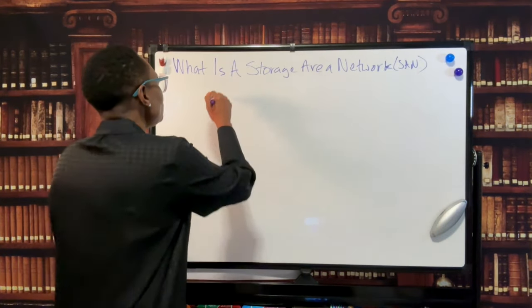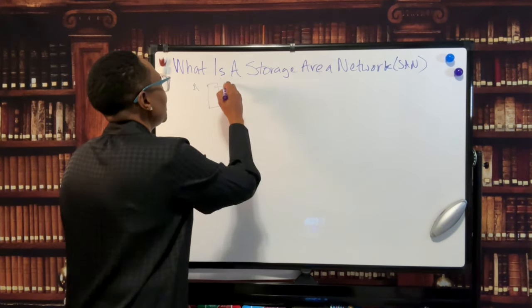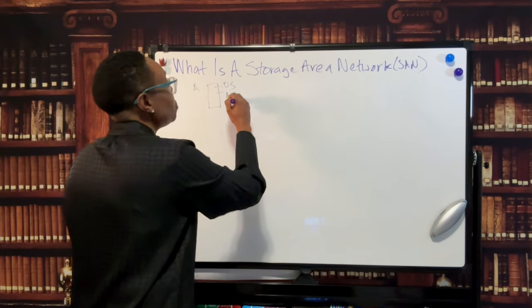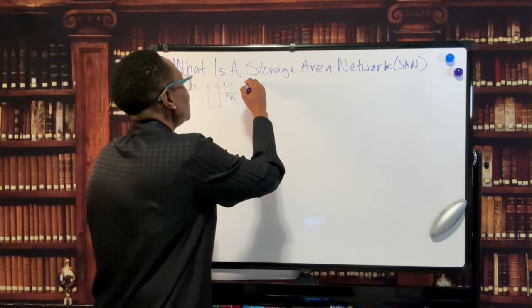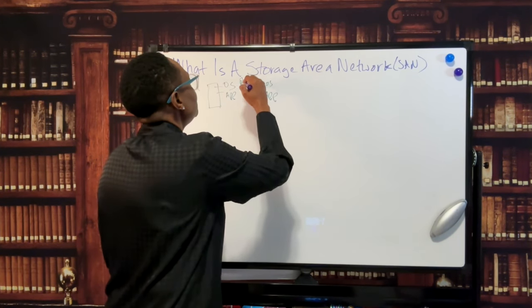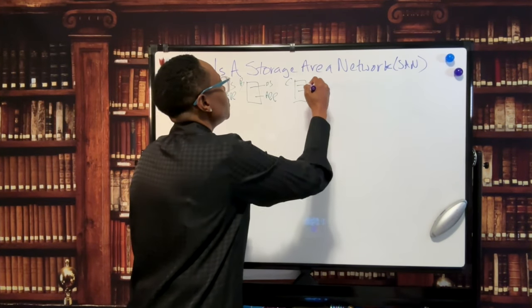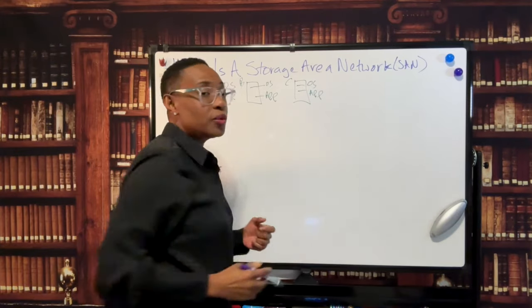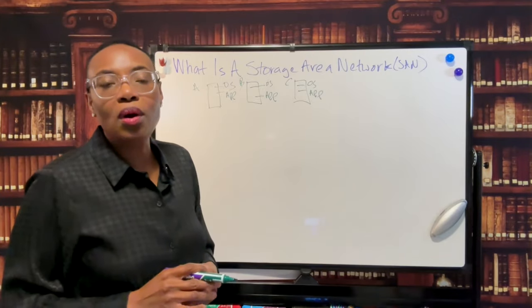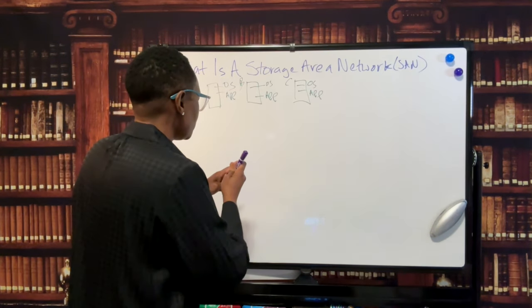So let's look at some common components that make up a SAN. We have servers - call that Server A running an operating system in an enterprise application. We have Server B, we have Server C running OS running an app. So for simplicity's sake we only have a few servers diagrammed, but in the real world most organizations use multiple servers.